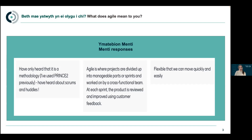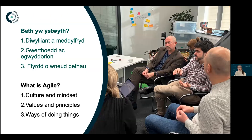A second, very comprehensive answer: Agile is where projects are divided up into manageable parts for sprints, and worked on by cross-functional teams. At each sprint, the product is reviewed and improved using customer feedback. This is a really great explanation of the delivery mechanism within Agile. Somebody else mentioned flexible — that we can move quickly and easily — which is exactly what it says on the tin. These are all really great answers, and the truth is it is a bit of all of them.